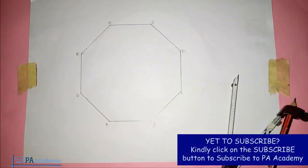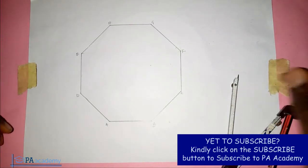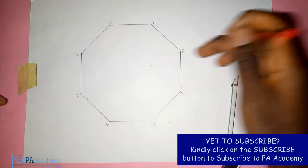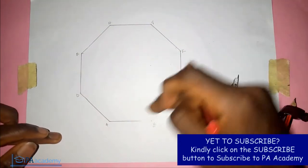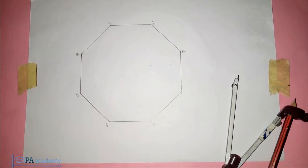Hello and welcome to PA Academy. In this video, I'm going to be showing you how to inscribe a circle inside an octagon. An octagon is a polygon with eight sides, as you can see: one, two, three, four, five, six, seven, eight.